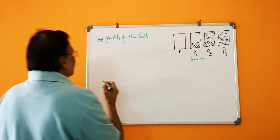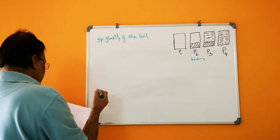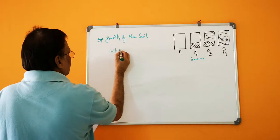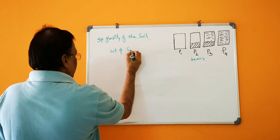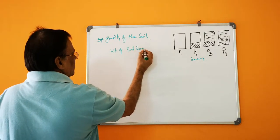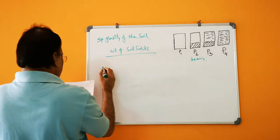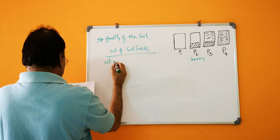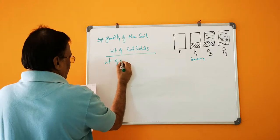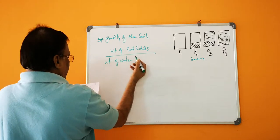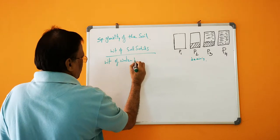P1, P2, P4. So specific gravity of soil is weight of soil solids divided by weight of water having same volume.